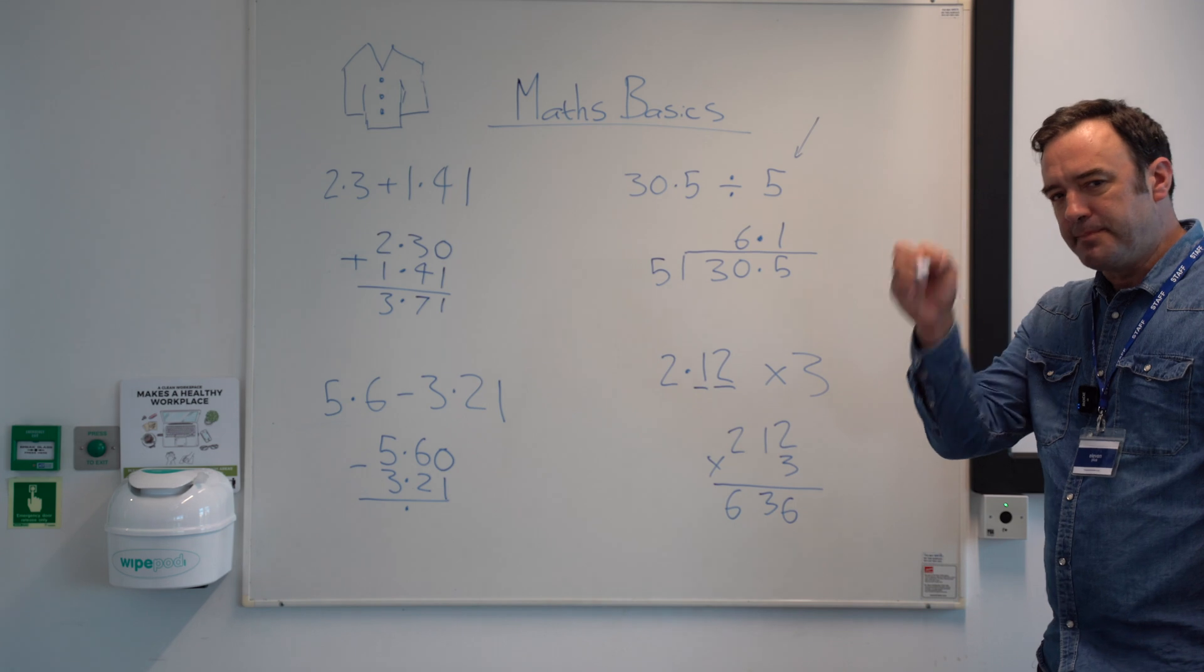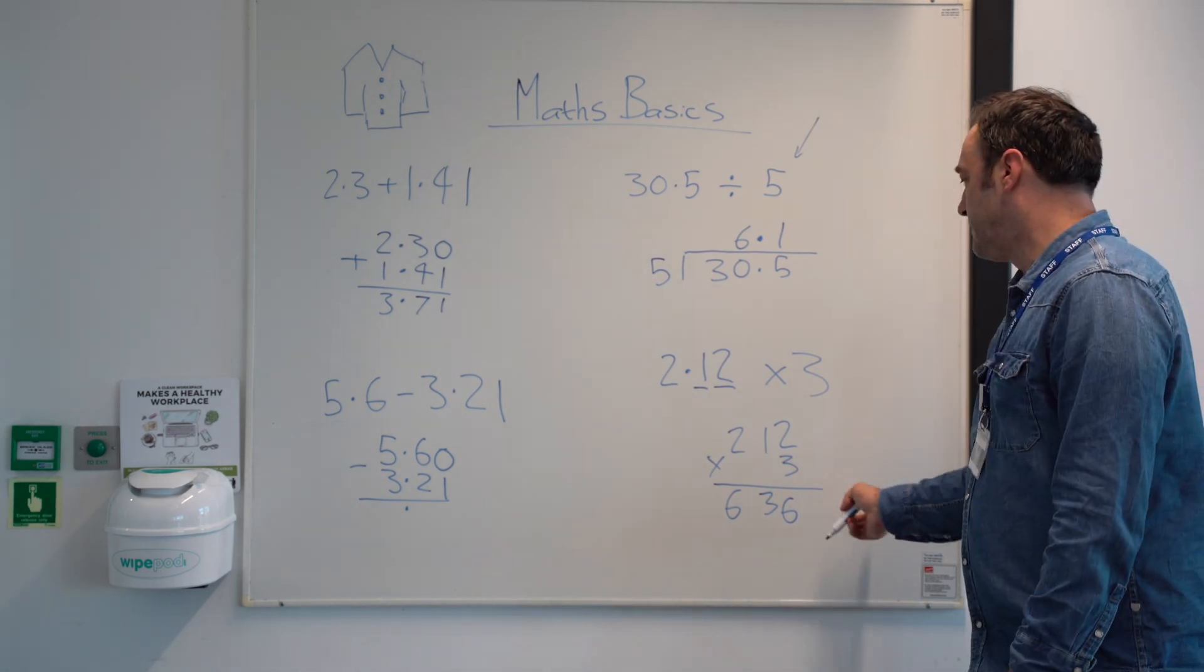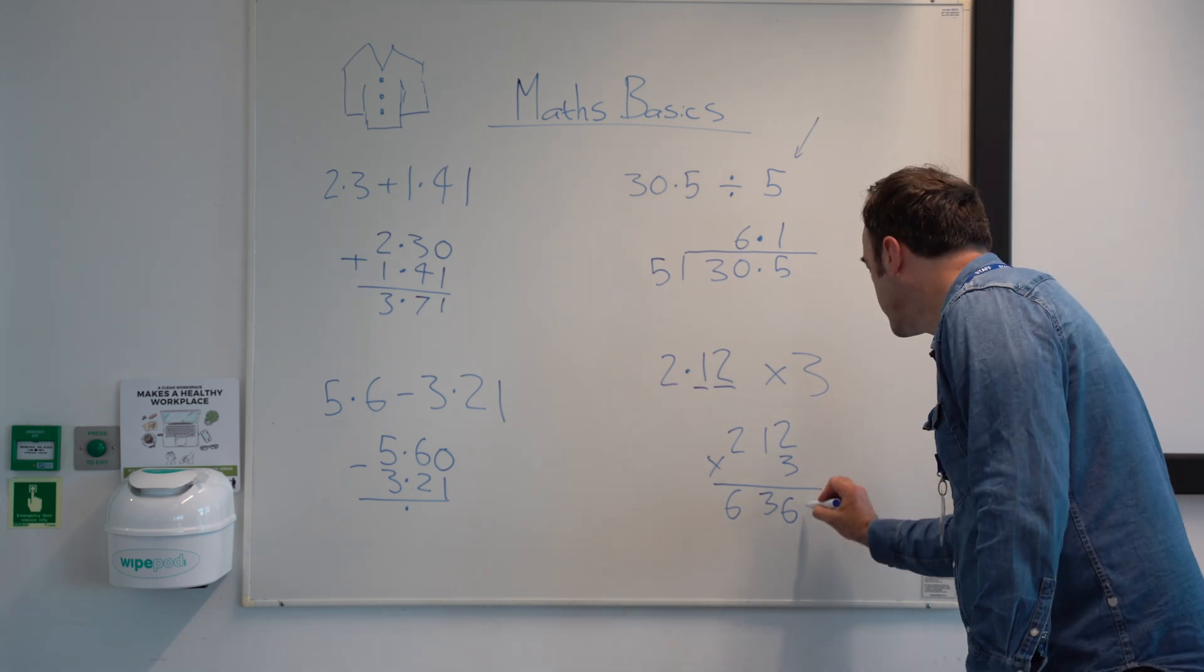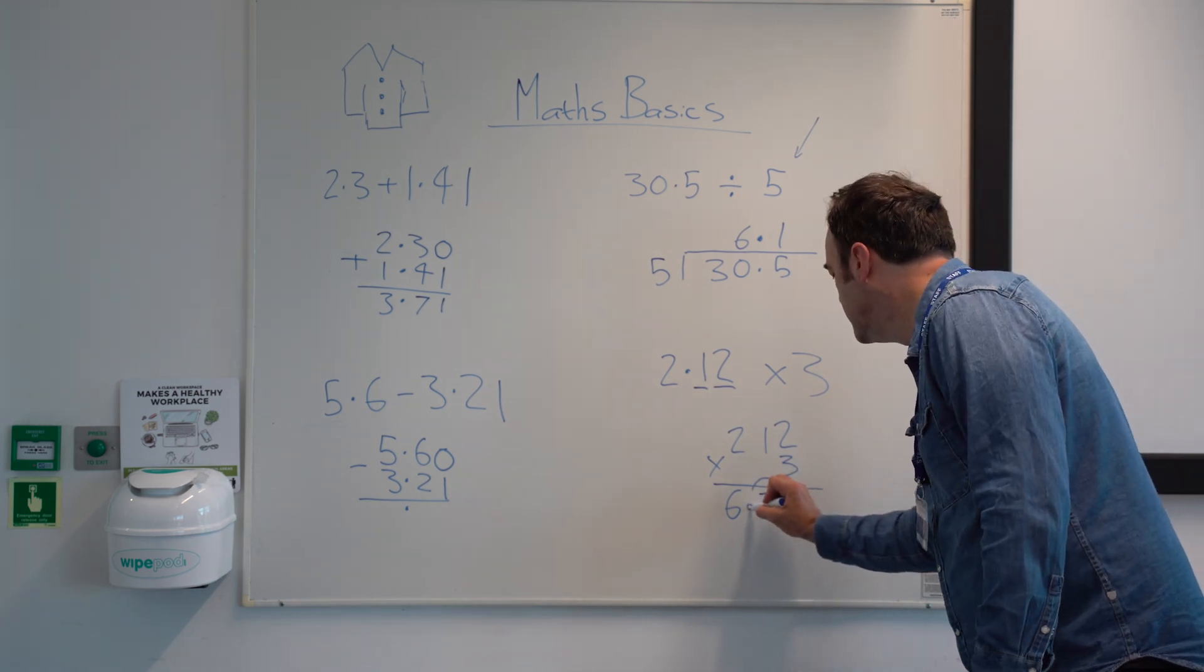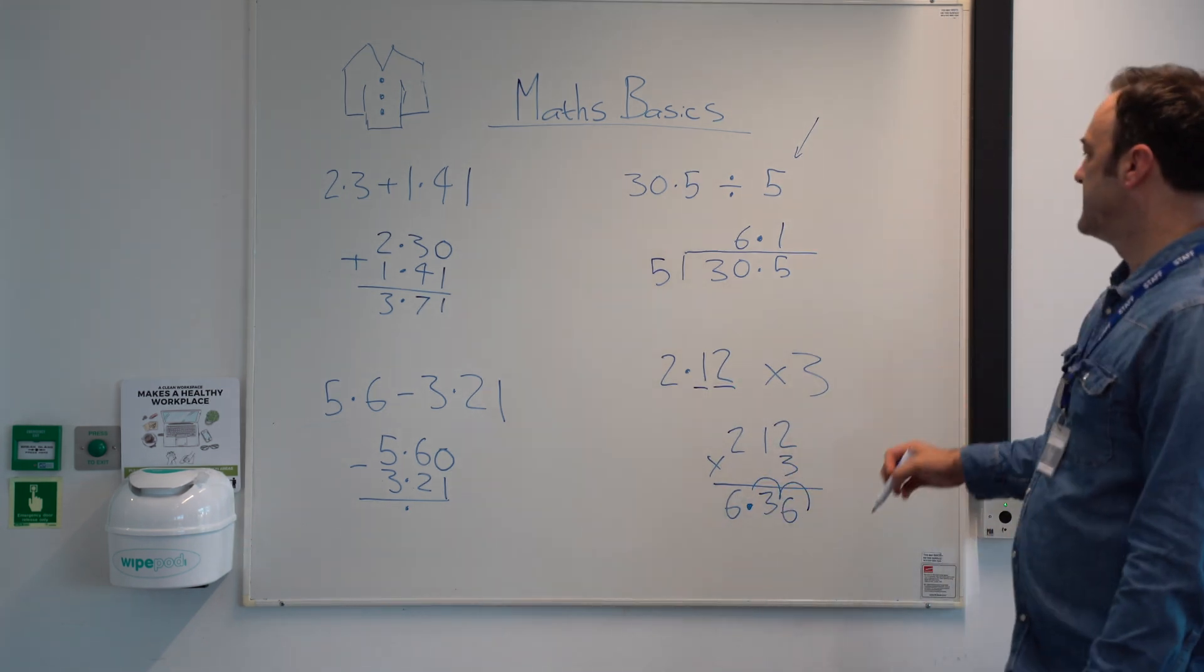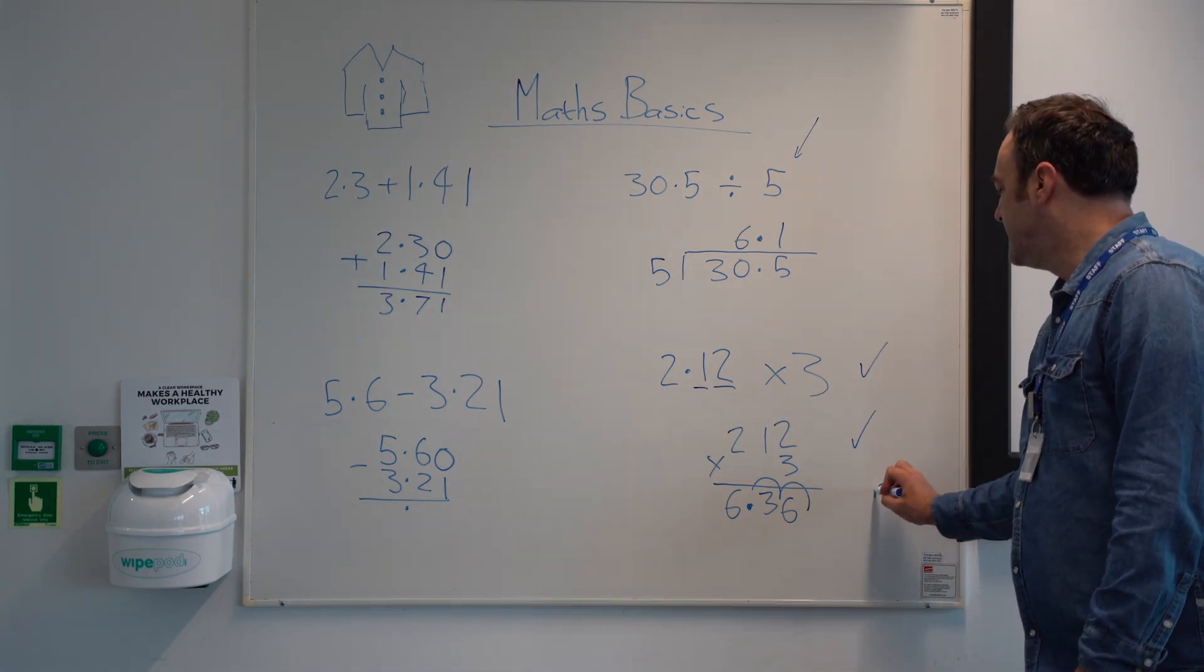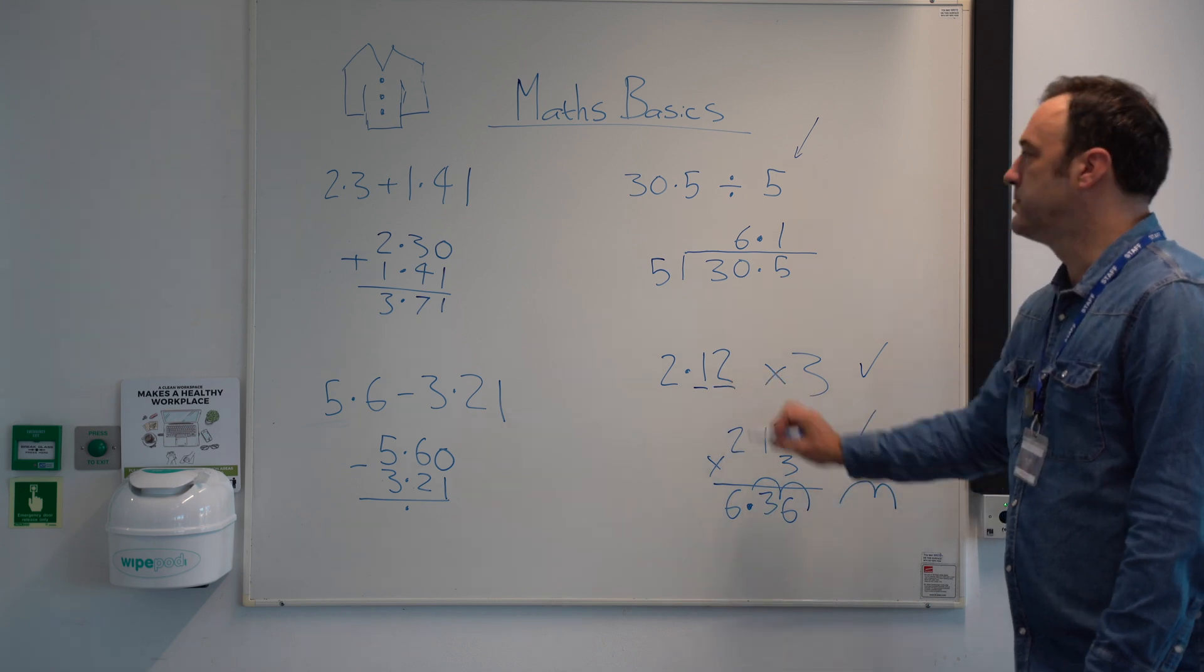Then what we say is bounce it back in at the end from the right. So we've got two decimal places in the whole question. So we do one, two. So it's 6.36. So that's copy it out, write it out without, bounce it back in at the end by the number of decimal places.